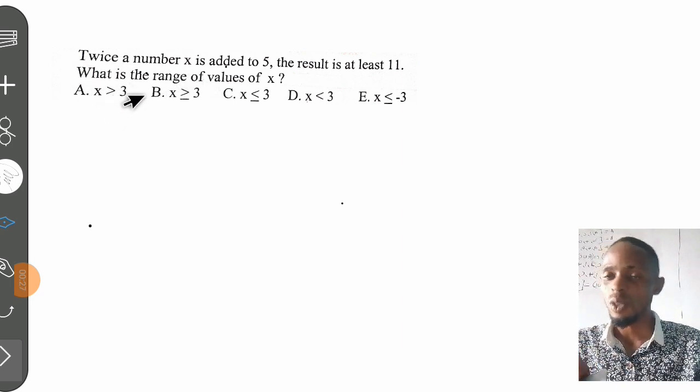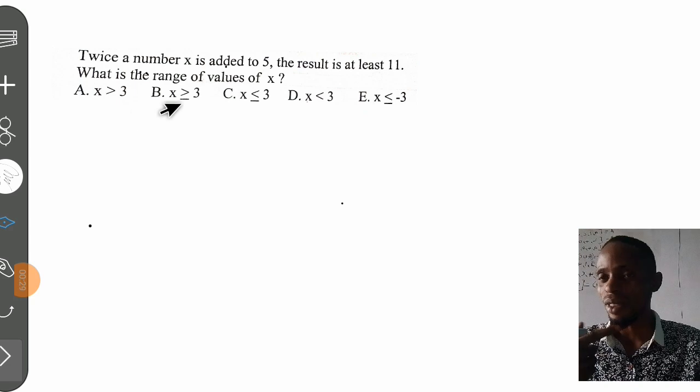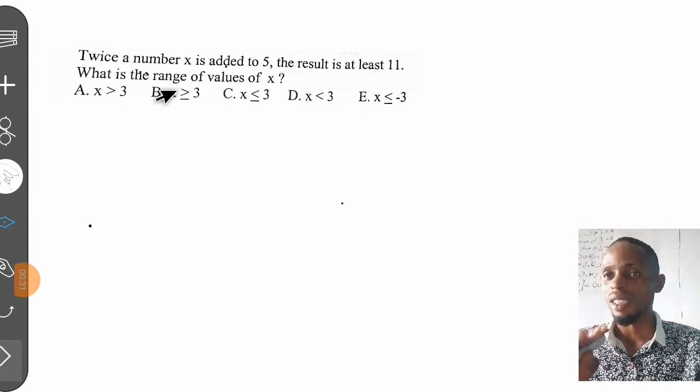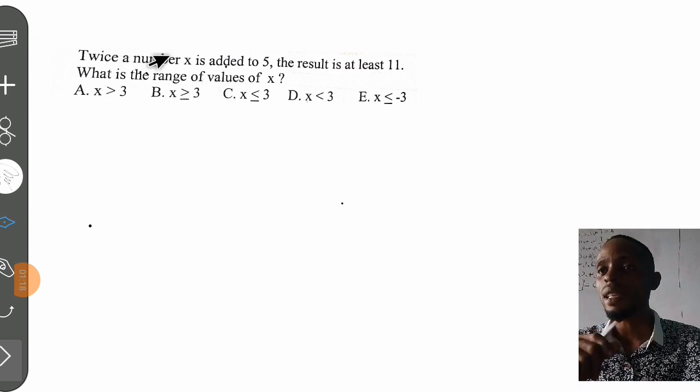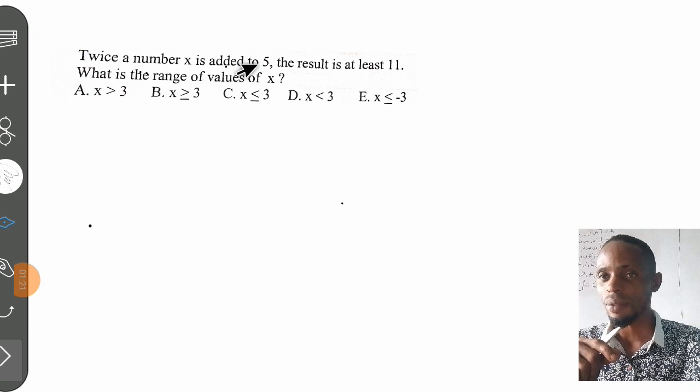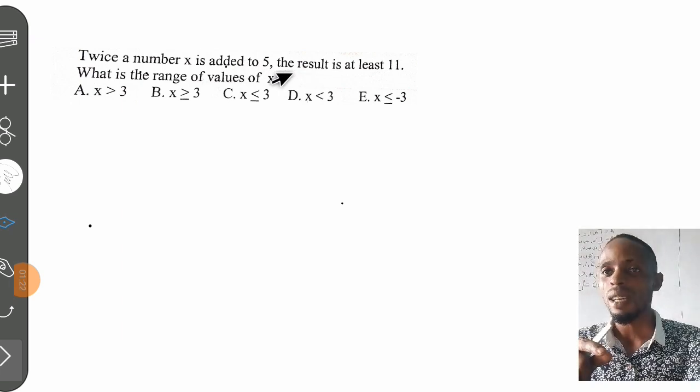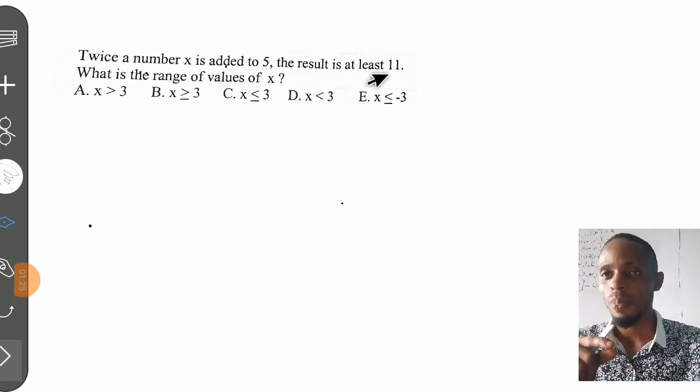We have this question to solve. This is the first question for today's mathematics class for the upcoming WAEC examination. This is from an objective question from a past paper. The question is: twice a number x is added to 5, and the result is at least 11.